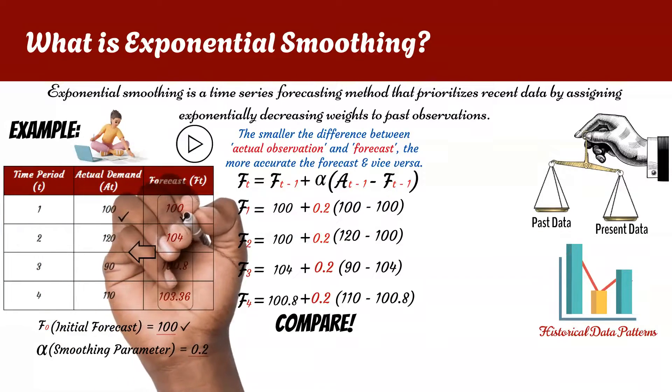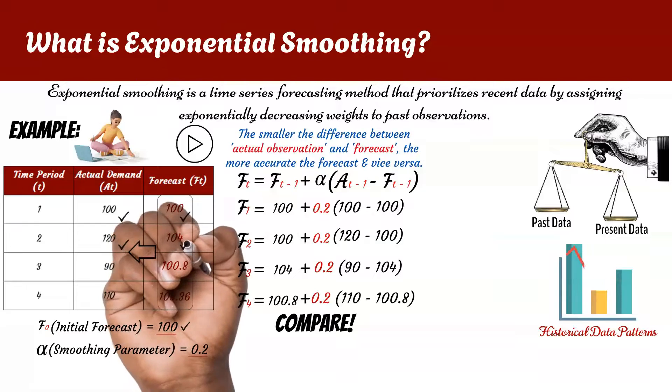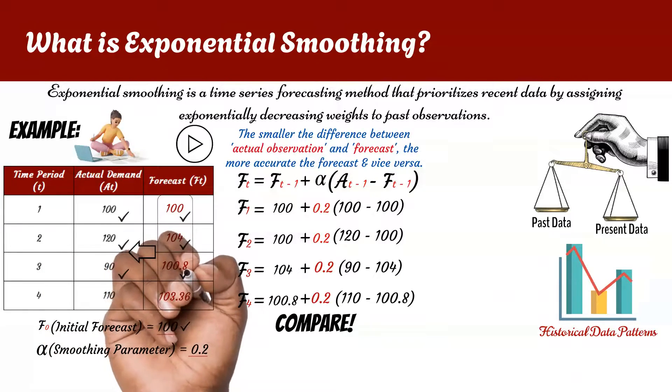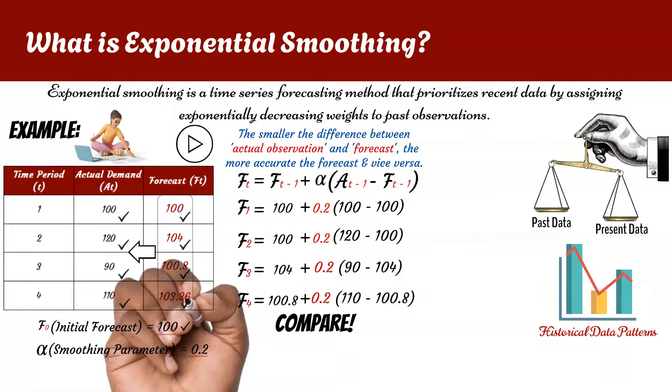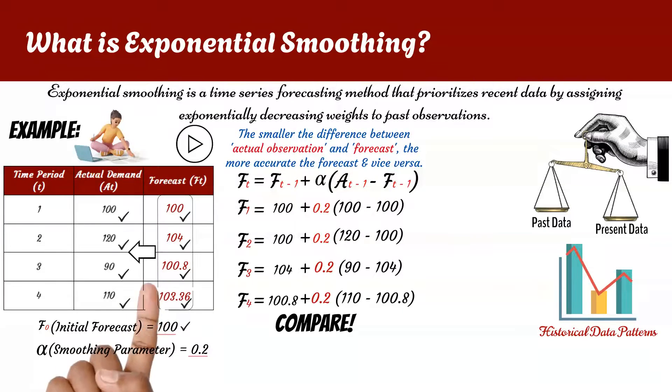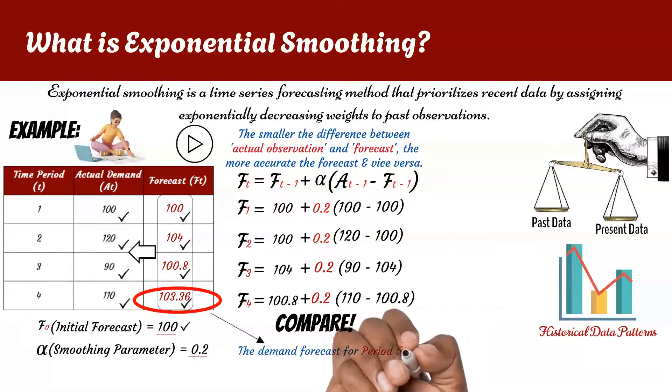In this case, the forecasted values are not far off from the actual values, which means that the operations and supply chain manager could use the forecasted value of period 4 to predict the demand for period 5.